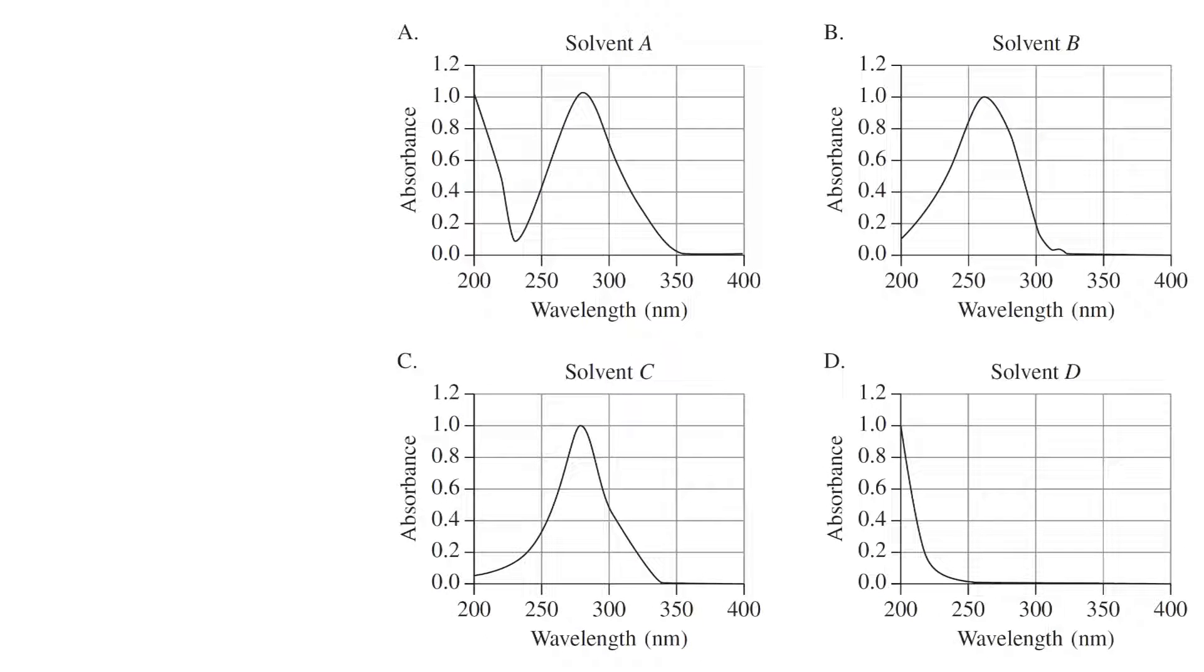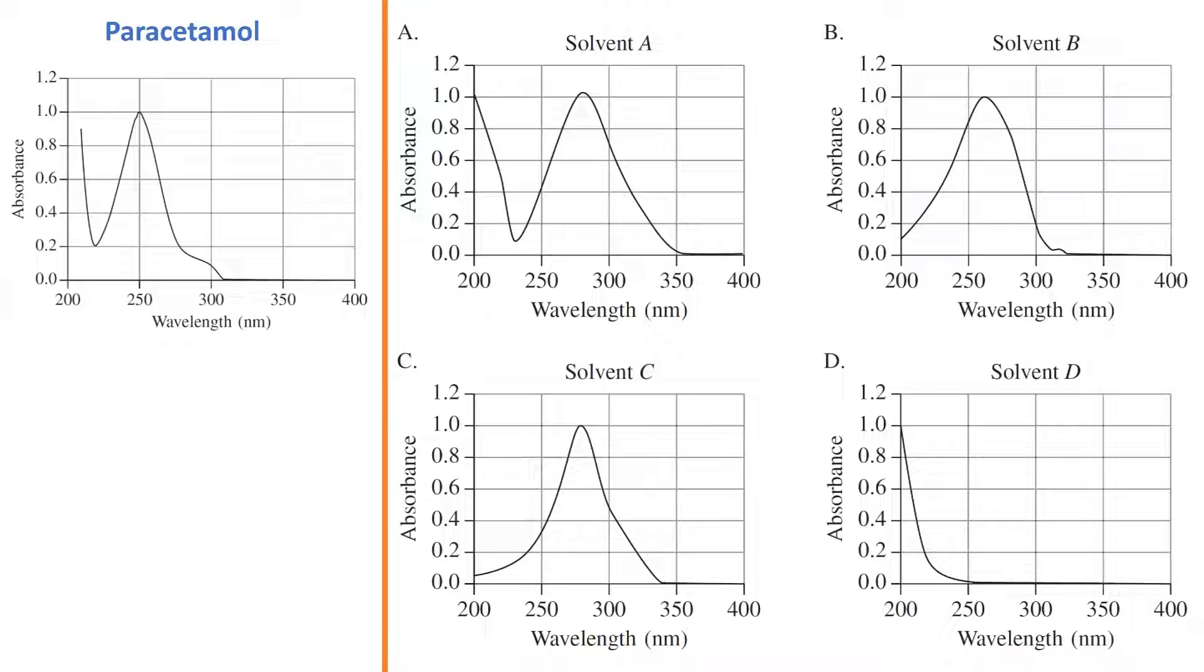On the next slide, we see the four options given. We keep the paracetamol spectrum to the left and compare against the solvents. Looking at solvents A through D, the only solvent which doesn't mask paracetamol's distinct peak at 250 nanometers is solvent D. Therefore D is the answer.